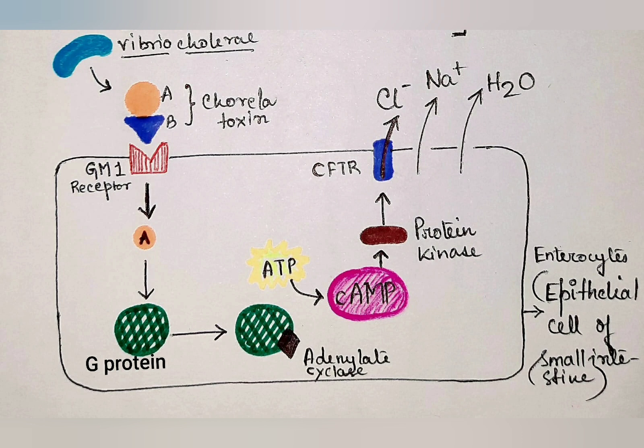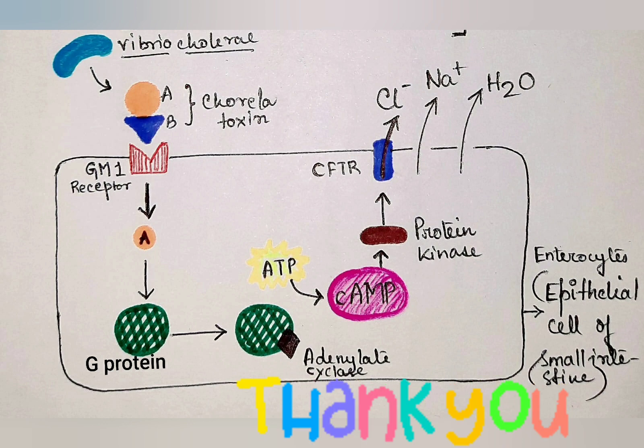Essentially, the GTPase activity gets inhibited, which is why the GTP-bound state is maintained — meaning the G protein remains active and keeps producing cyclic AMP in very high quantities. This is the brief mechanism of action of cholera toxin. If you have any confusion, please feel free to leave a comment. Thank you.